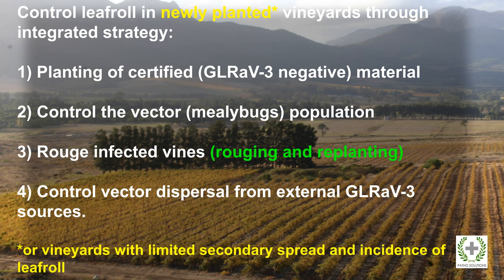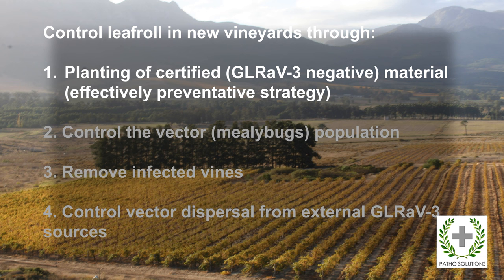The control strategy we apply in South Africa is based on four pillars — it's an integrated strategy. We find greatest success where all four components are applied, and they need to be applied on newly planted vineyards or vineyards that have limited secondary spread. The four components include: planting of certified grapevine type-3-negative planting material, controlling the vector, roguing infected vines, and controlling vector dispersal from external sources.